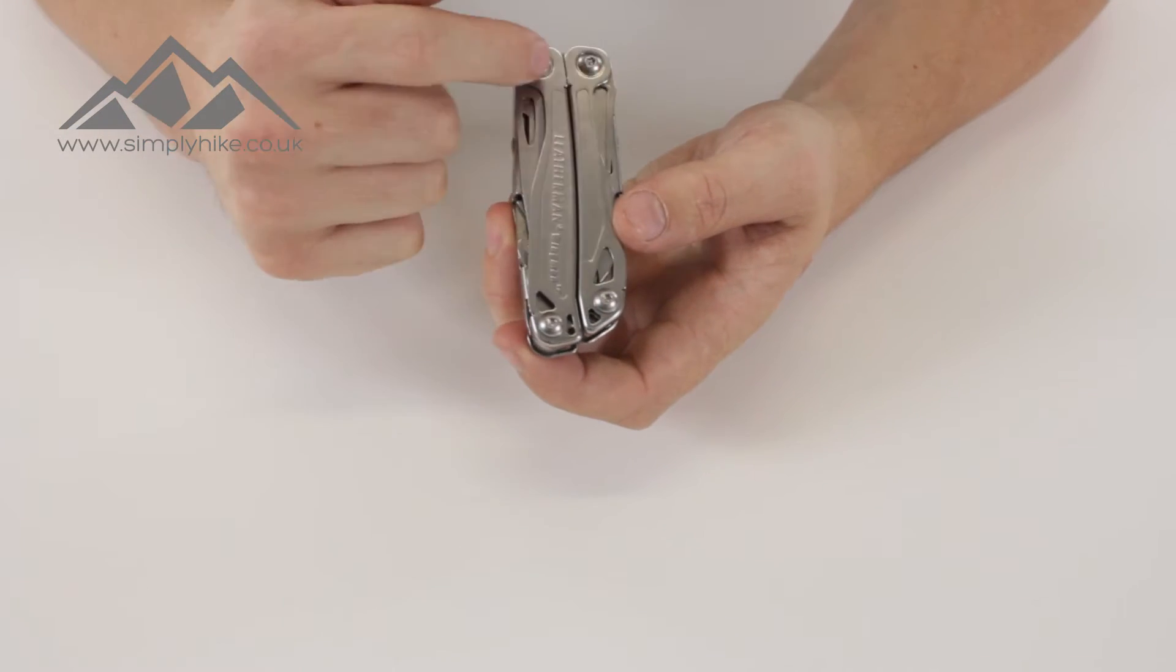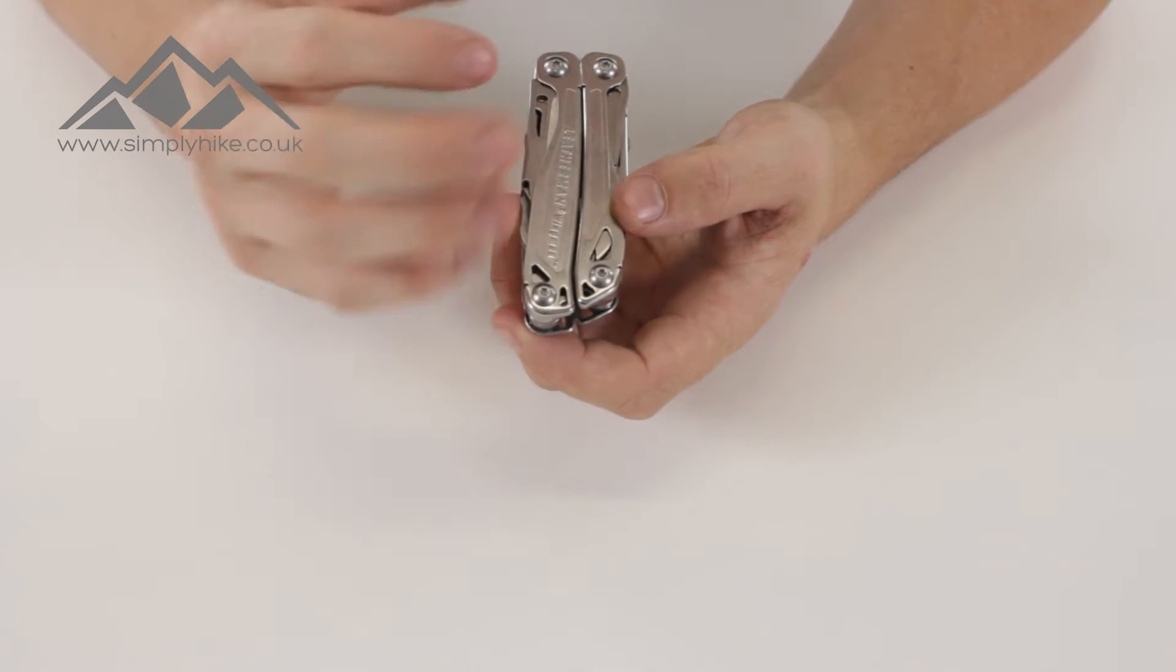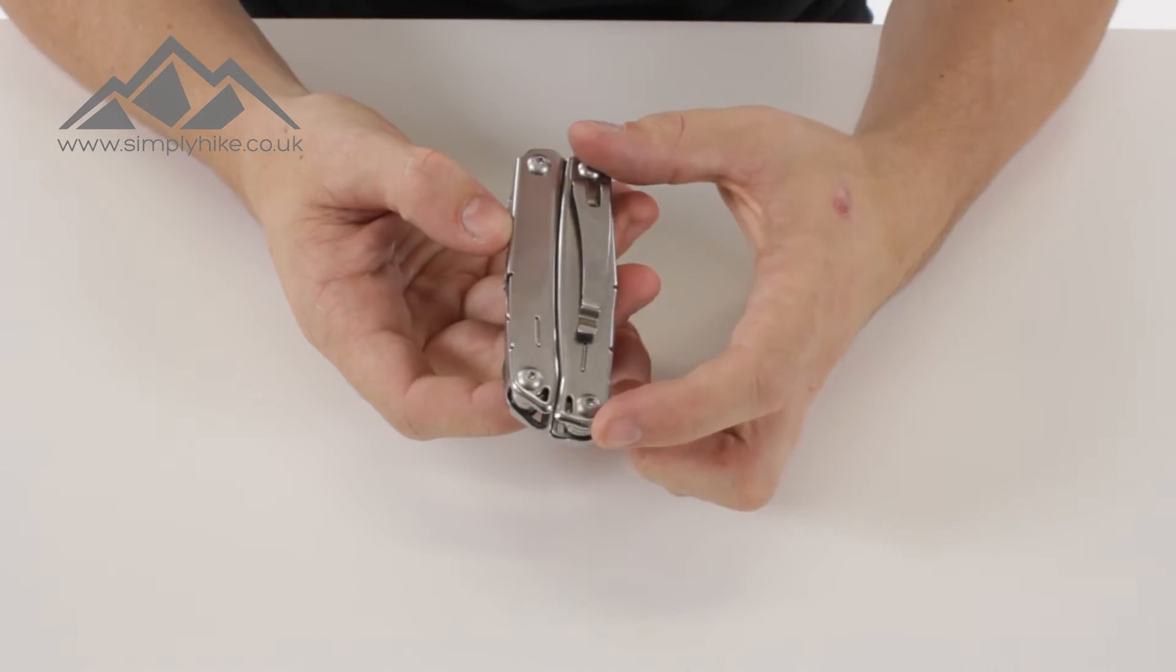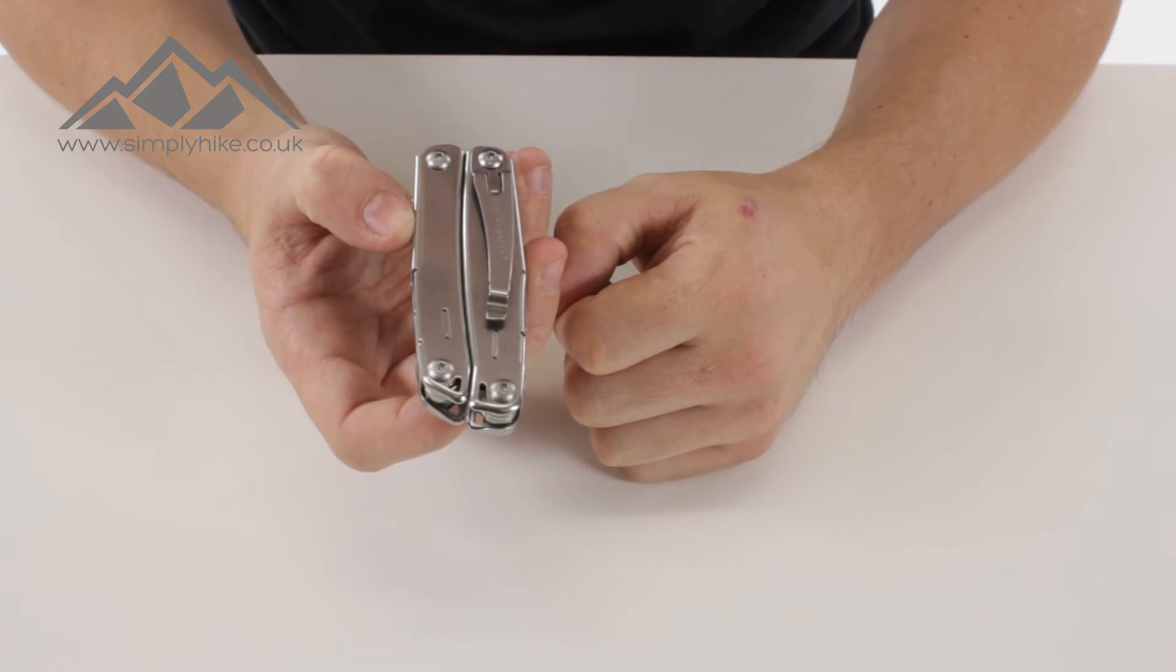On the front here you'll notice you do have four bolts. That means you can tighten up and you can loosen the multi-tool as well so you can get it to suit all your needs. If I just spin it to the back you'll see you also do have another four additional bolts as well as a buckle system on the back.